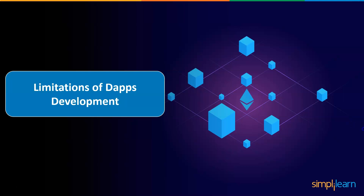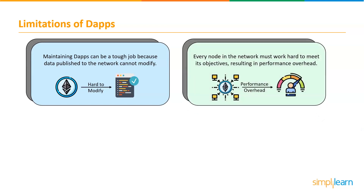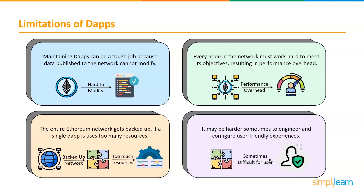Now let's understand the limitations of dApps development. Maintaining dApps can be a tough job because code and data published to the blockchain network is very hard to modify. To achieve high levels of security, integrity, transparency, and reliability, every node of the Ethereum network needs to run and store every transaction, which leads to huge performance overhead. The entire Ethereum network can get backed up if a single dApp is using too many computational resources. Additionally, it may be harder to engineer user-friendly experiences, as the average user might find it too difficult to set up a tool stack necessary to interact with the blockchain in a truly secure manner.